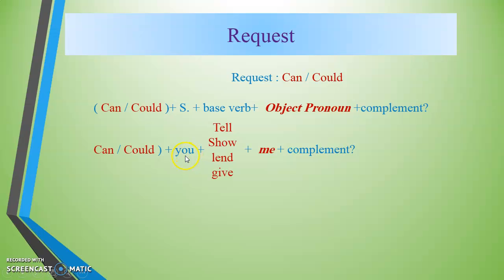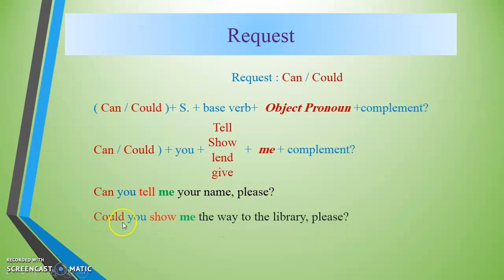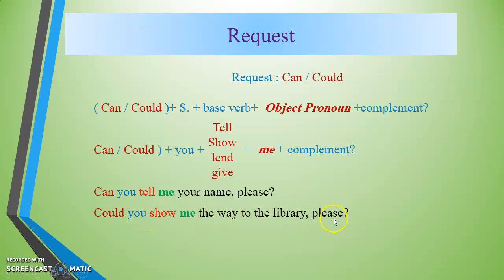With verbs like tell, show, lend, and give, we use object pronouns. For example: 'Can you tell me your name, please?' Here 'tell' is the base verb, 'me' is the object pronoun, and 'your name' is the complement.